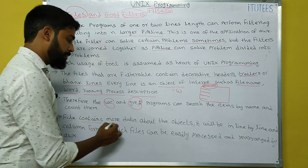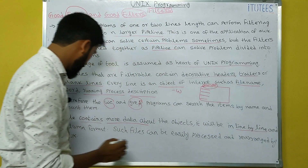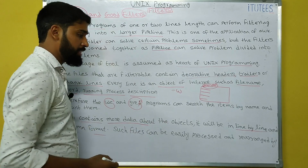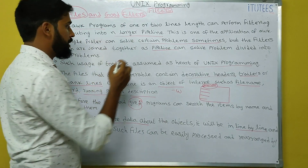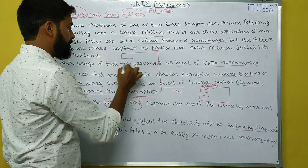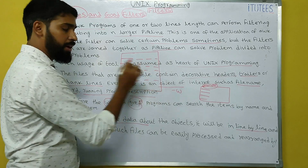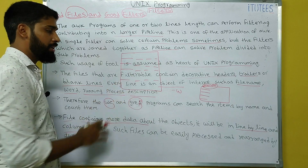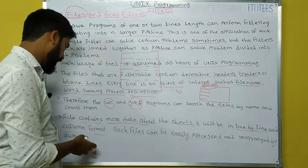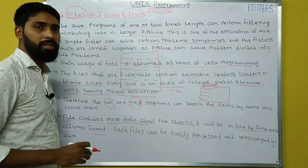The file contains more data about the objects. It will be line by line and in a column format. Such files can be easily processed and rearranged by AWK. If the file is arranged line by line and in column format, these files can be easily handled and rearranged with the help of the AWK command. This is about good files and good filters.